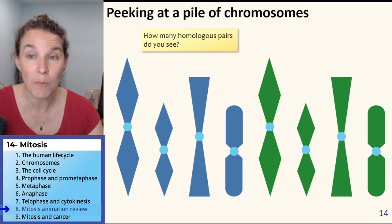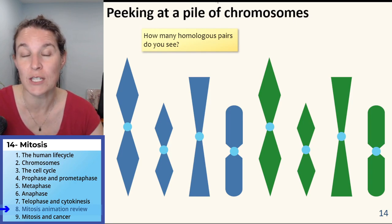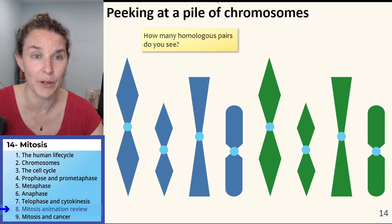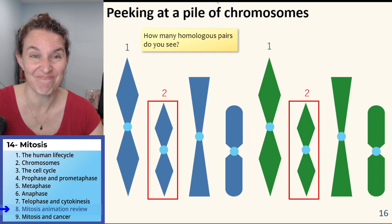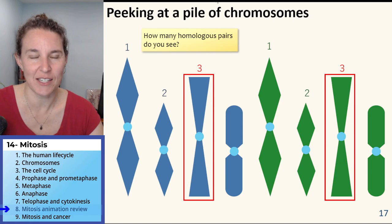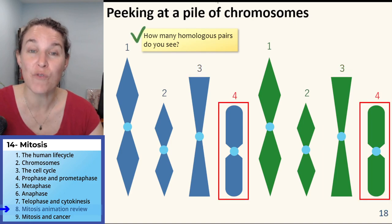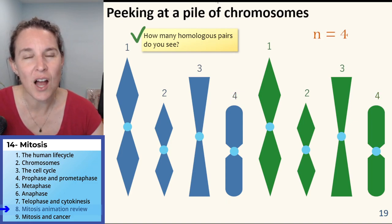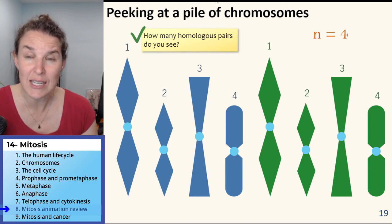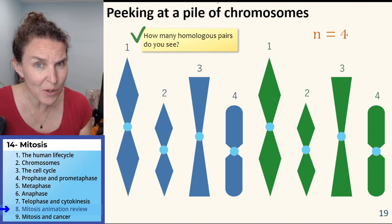I told you that there are four pairs of homologous chromosomes. Can you identify them? Match up the homologues. Can you do that? Push pause if you need to. This is interesting and I didn't talk about this before, but this is going to be an important thing when we start talking about heredity.